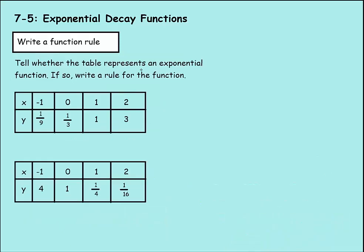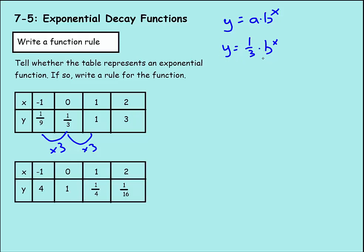It says: tell whether the table represents an exponential function; if so, write a rule for that function. We notice the first number is 1 ninth, then 1 third, then 1, then 3 — it's growing, being multiplied by 3 each time. To write this function: y equals a times b to the x power. We solve for a using the zero power, which gives us 1. So a equals 1 third, giving us y equals 1 third times 3 to the x.